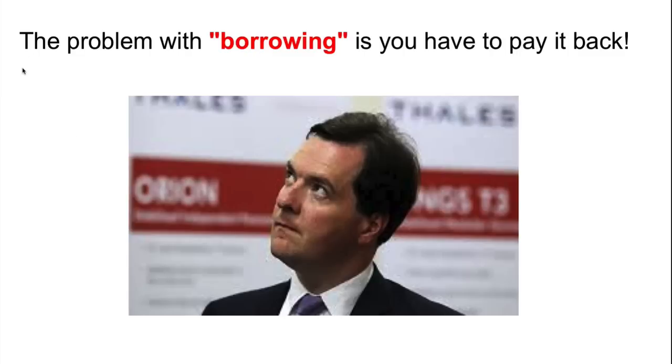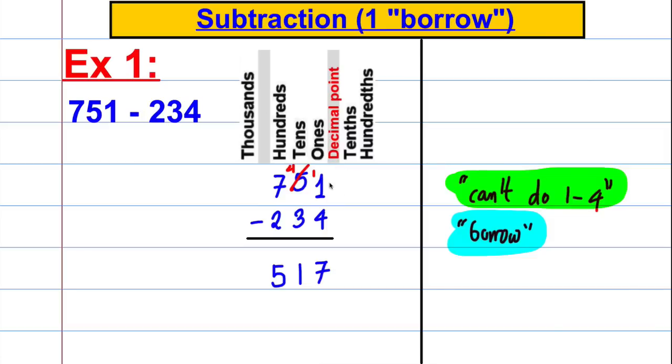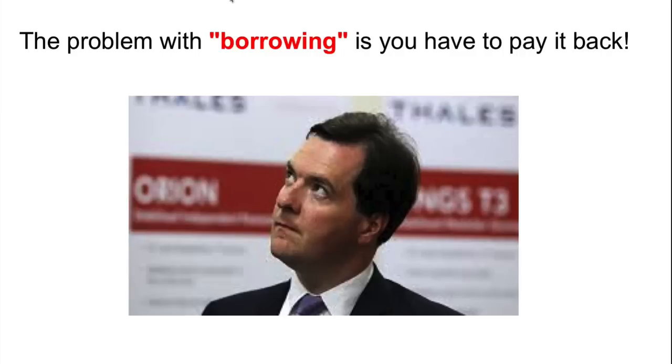Now they may or may not get that question right. I've found that most kids are actually quite good with the column method in a simple case like that. But for me there's a problem with the phrase can't do 1 subtract 4 when they're trying the first column and also with the term borrow. Now the problem with borrowing, the term borrowing, as this man George Osborne in the UK knows, is if you borrow too much money you have to pay it back. So when we talk about borrowing here, borrowing a ten here, we're not actually paying it back.